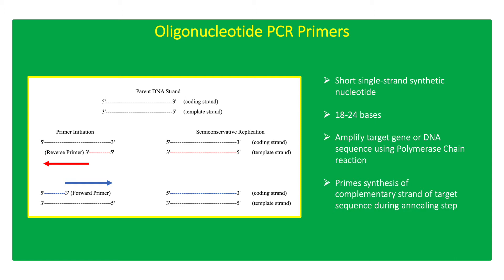Oligonucleotide primers are used to amplify the gene of interest into millions of copies using polymerase chain reaction. PCR primers are short single-strand synthetic nucleotides about 18 to 24 bases that are complementary to the ends of the target DNA sequence. The sequence of PCR primers is responsible for the high fidelity and specificity of PCR analysis.